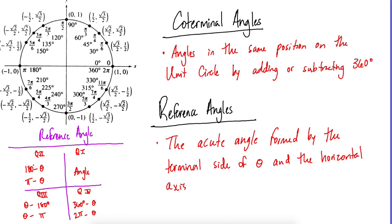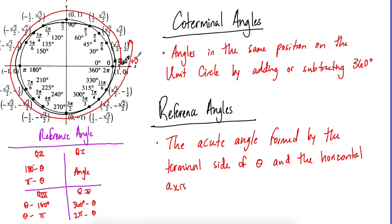The unit circle is continuous and can go around 360 degrees, then around again infinitely. Co-terminal angles are any angles in the same location, plus or minus 360 degrees. For example, 30 degrees plus 360 is 390, and you can also subtract 360 going in the negative direction.